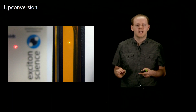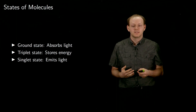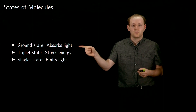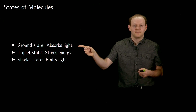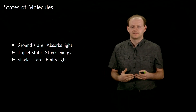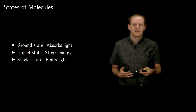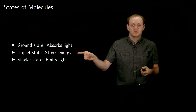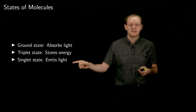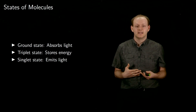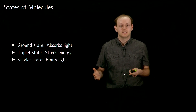Upconversion is made up of two kinds of molecules: a sensitizer and an emitter. These molecules have three different states that we care about. The first is the ground state — the lowest energy state and the one that molecules normally have. The ground state is able to absorb sunlight. There are two kinds of excited states that can be present after some energy has been added from sunlight being absorbed. The triplet state stores energy. The singlet state takes energy and releases it as light. The reason for the names triplet and singlet is that there are three triplet states and one singlet state. For our purposes, the three triplet states are all the same.